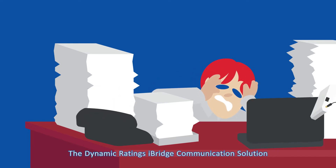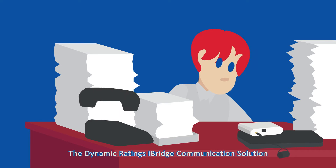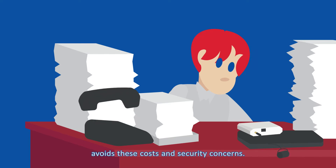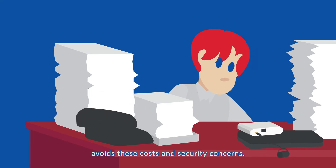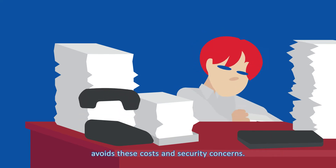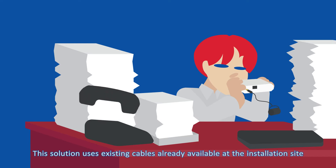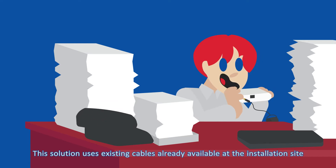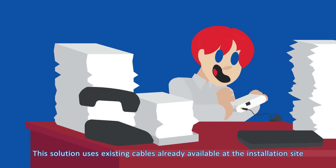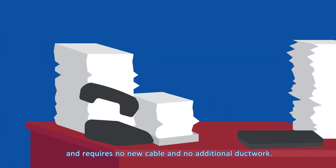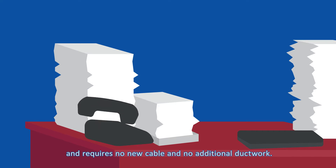The Dynamic Ratings iBridge communication solution avoids these costs and security concerns. This solution uses existing cables already available at the installation site and requires no new cable and no additional ductwork.